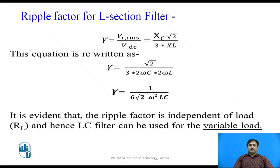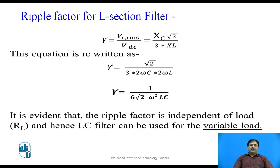The ripple factor is defined as VR(rms)/VDC, which equals √2·XC / (3·XL). Substituting XC = 1/(2ωC) and XL = 2ωL, the ripple factor comes out to be 1/(6√2·ω²·L·C). When we look at this formula closely, there is no load value — the equation is independent of the value of load. That's why we can say this type of filter is very good for circuits with a variable load.